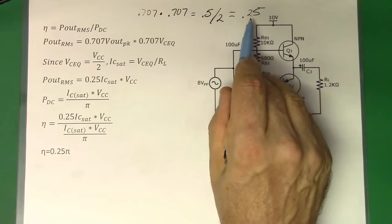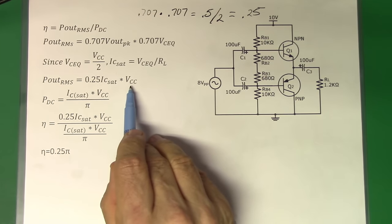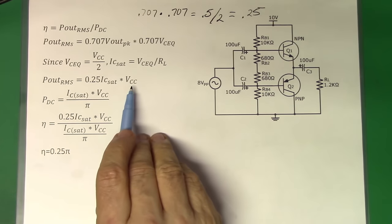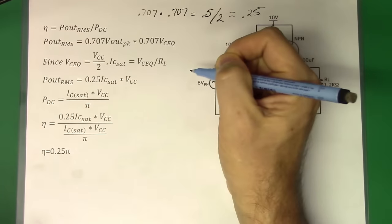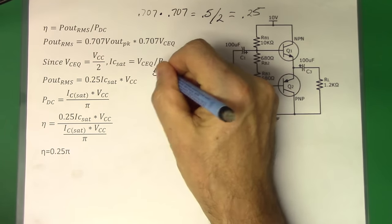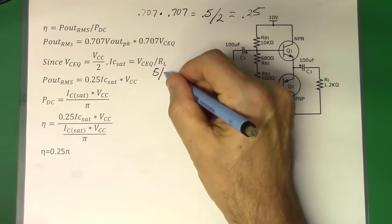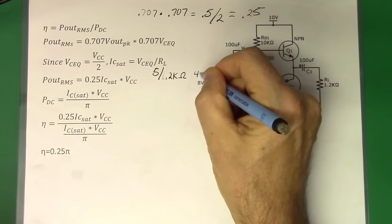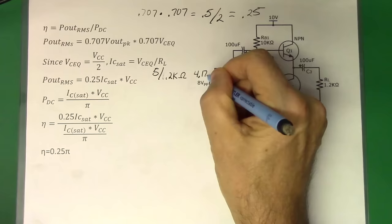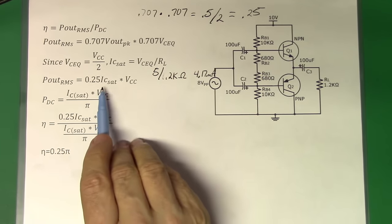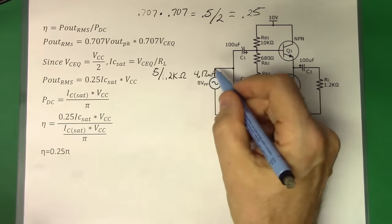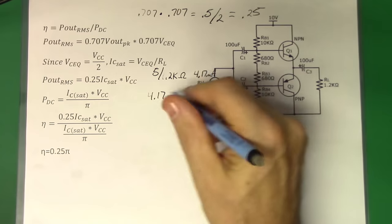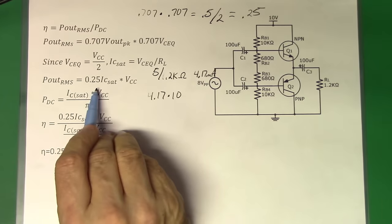That's just been taken and put into one equation instead of dividing VCC by 2 — either way the math is still the same. So: 0.25 times ICSat times VCC. What's ICSat? The saturation current is going to be 5 volts divided by the 1.2 kΩ resistor, which gives us a current of 4.17 milliamps. So we have 4.17 milliamps times our VCC value of 10 volts, then we multiply the whole thing by 0.25.